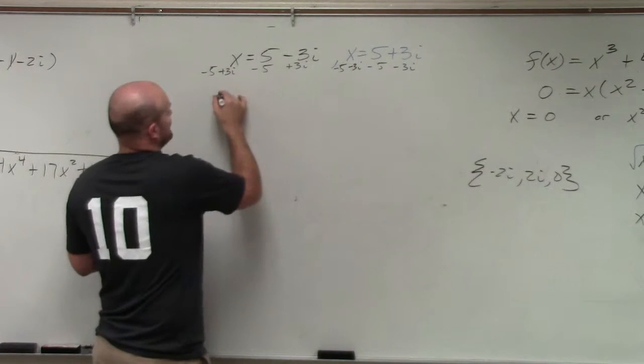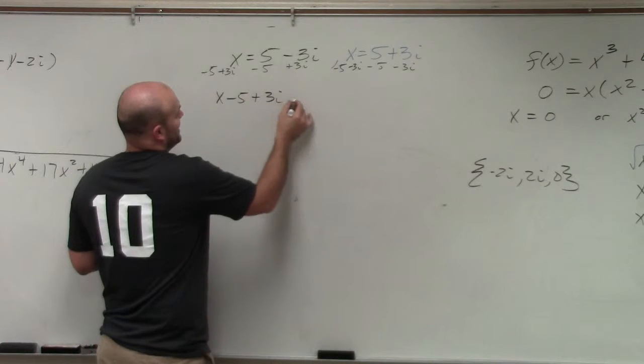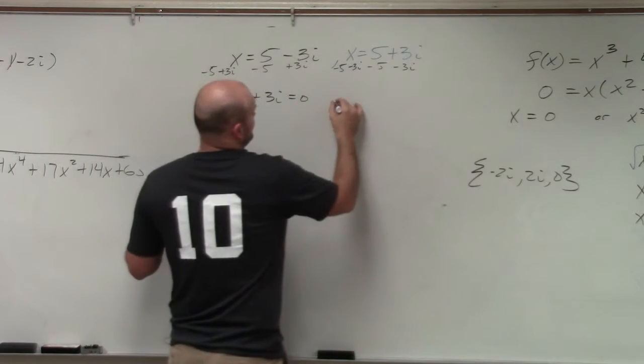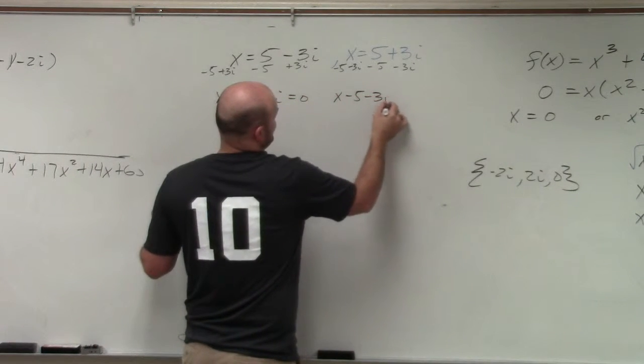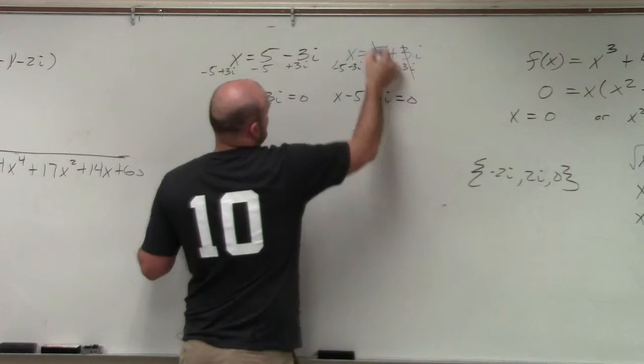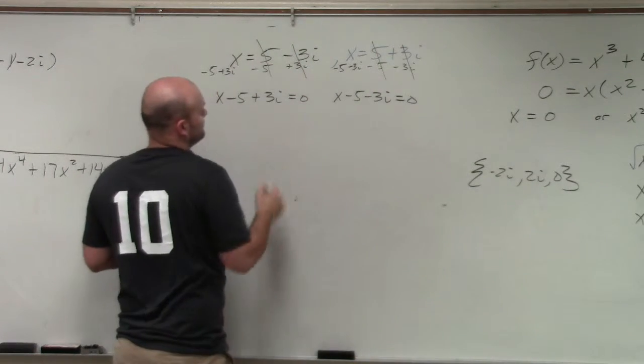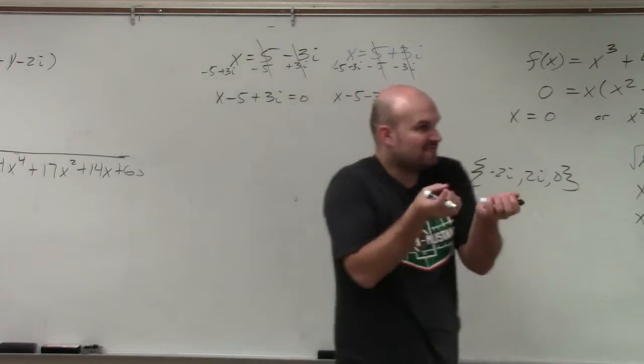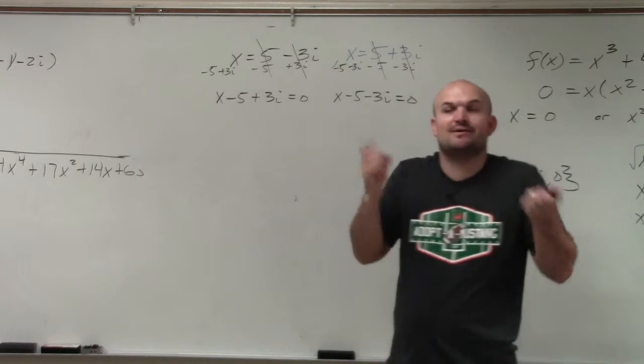So therefore, I get x minus 5 plus 3i equals 0, and x minus 5 minus 3i equals 0. Those are my factors set equal to 0. That's how I got the zeros.